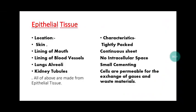Epithelial tissue. Basically our skin, lining of mouth, blood vessels, lungs' alveoli, and kidney tubules are all basically made up of epithelial tissue. The epithelial tissue forms a tightly packed, continuous sheet of epithelial cells. There is no intercellular space, and just because of small cementing, the exchange of gases and materials, minerals, and waste material can take place easily. That's why epithelial tissues are present in areas where absorption and exchange of gases is required.